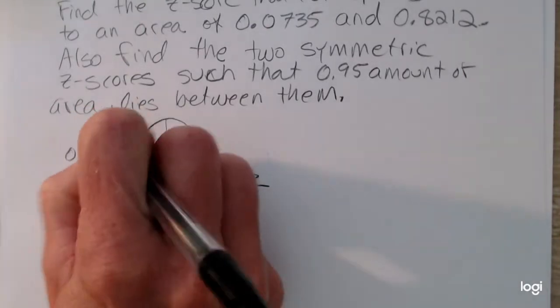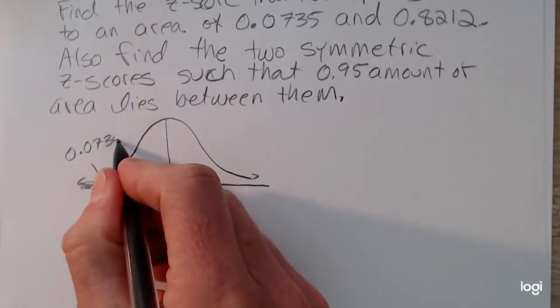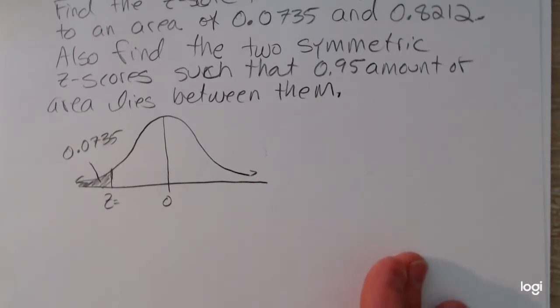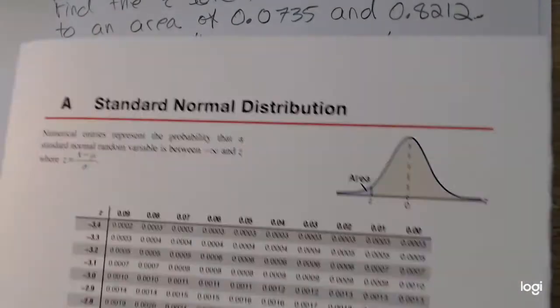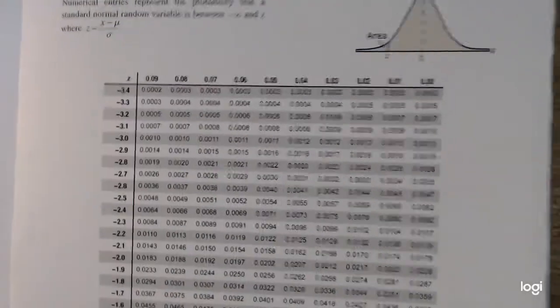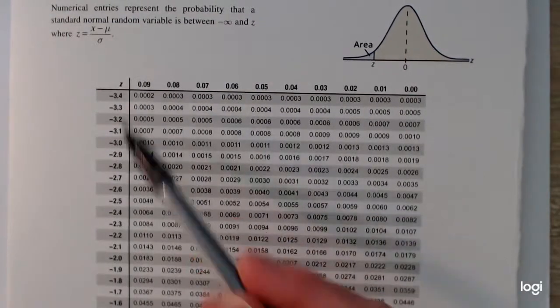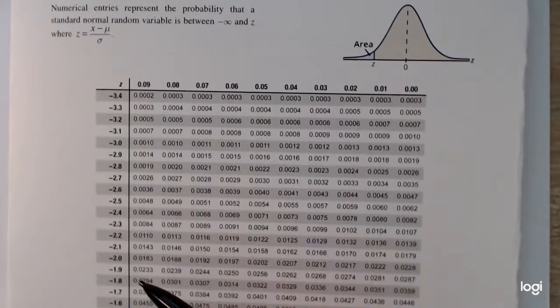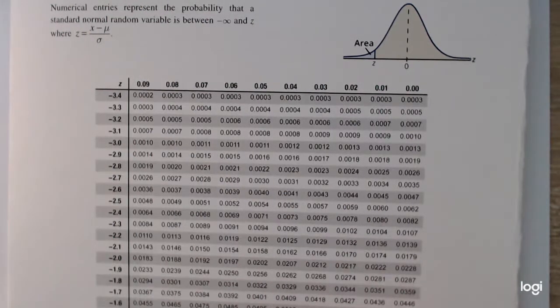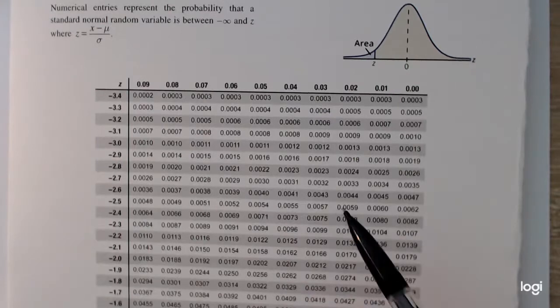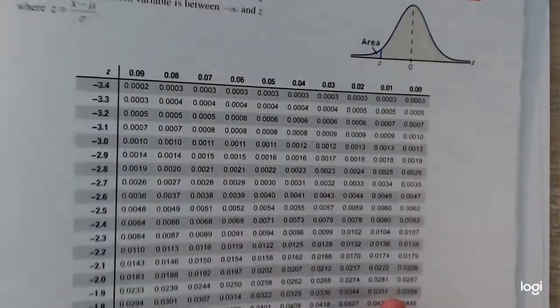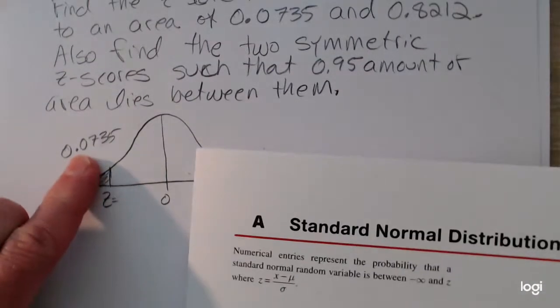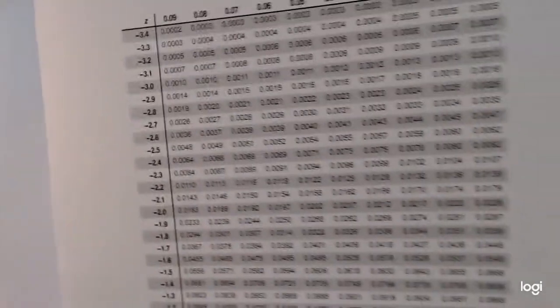So looking at the standard normal table, because I expect my z-score to be negative, I'm going to be on the first page of my table. Remember, along the outside of the table are the z-scores, and that's what I'm looking for. And what I'm given is the area or the probability, the cumulative area or the cumulative probability. So looking in the table, I need to get or find the value as close as I can to 0.0735.